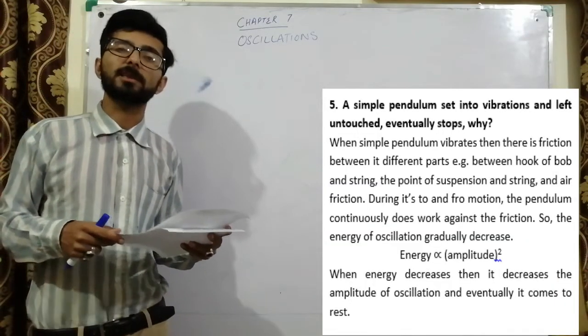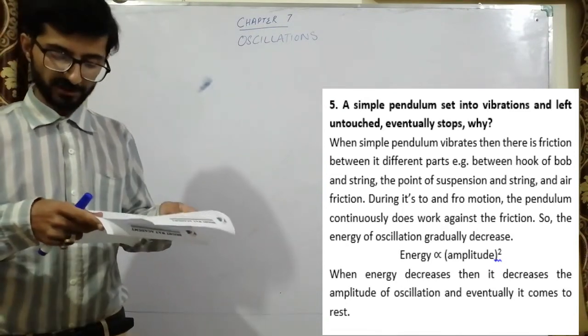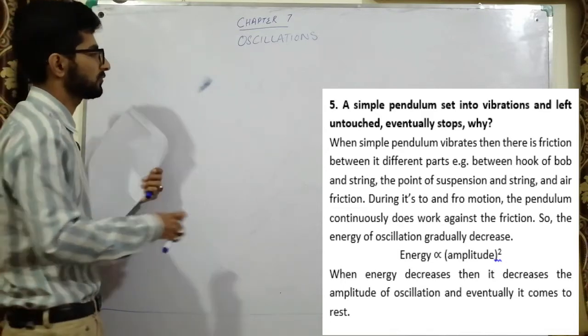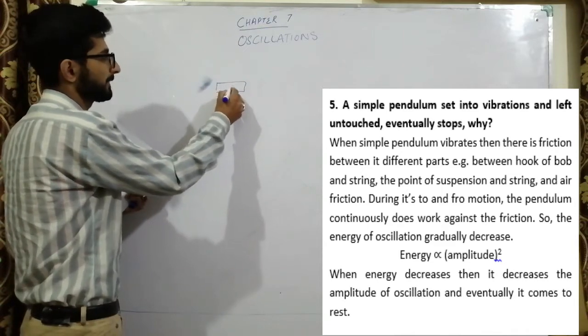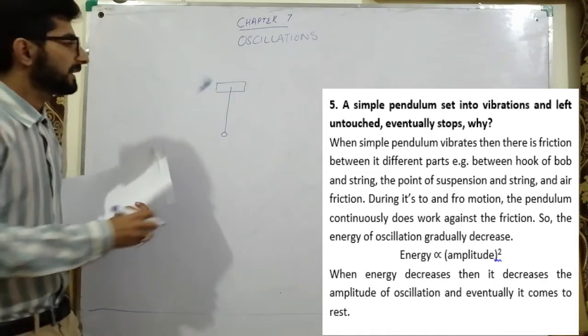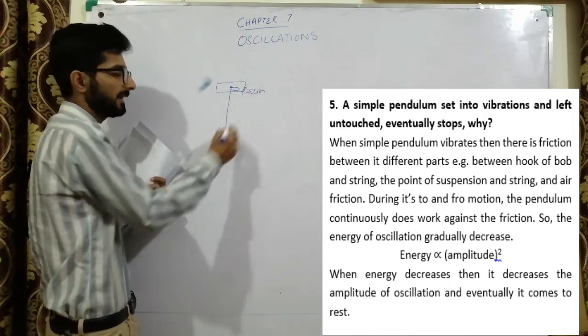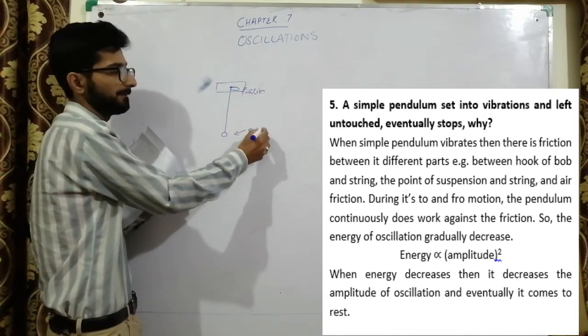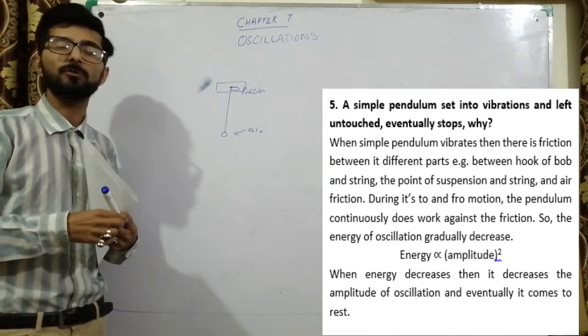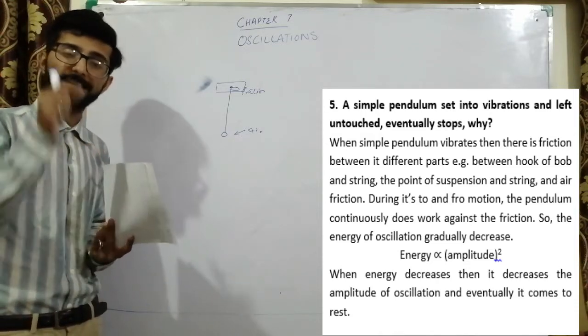Question number 5: A simple pendulum is set into vibration and left untouched, and it eventually comes to stop. Why? When simple pendulum vibrates, there is friction between different parts, between hook and string, and air friction. During its to-and-fro motion, the pendulum continuously does work against the friction, so the energy of oscillation gradually decreases.